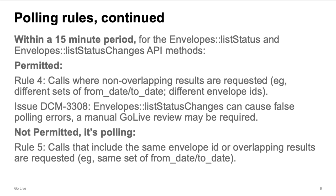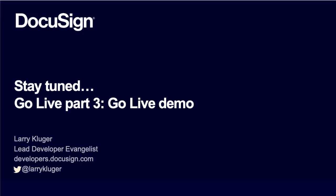However, requesting a manual review will delay your overall GoLive process. A better solution is to only make the call once every 15 minutes. Rule five is the polling situation: you can't call these API methods with the same envelope ID or overlapping result requests more often than once every 15 minutes.